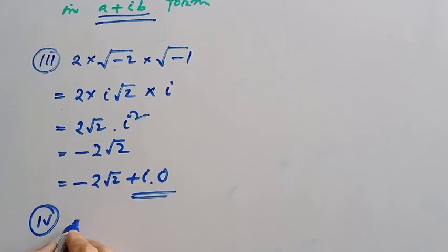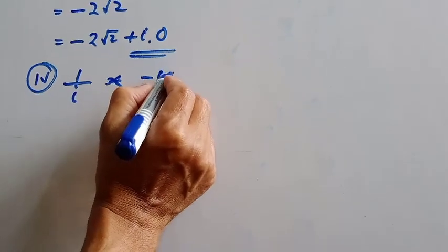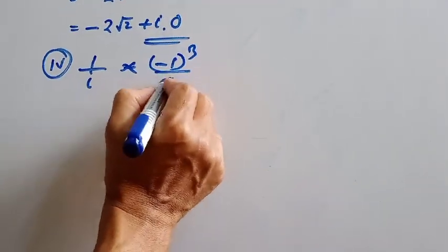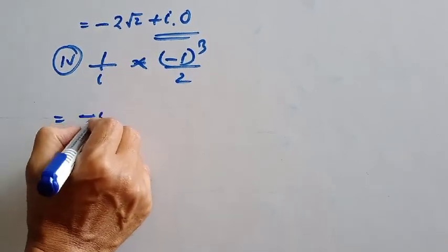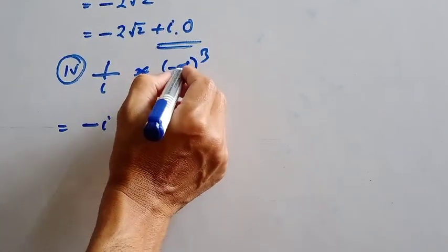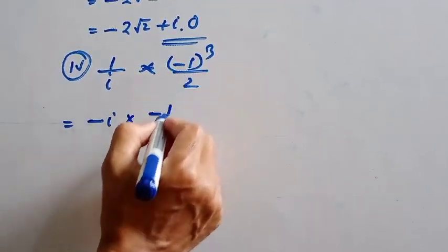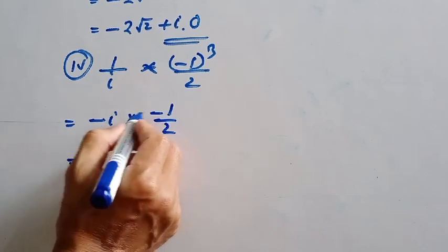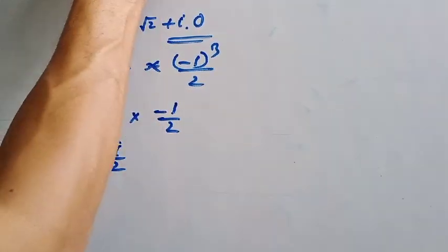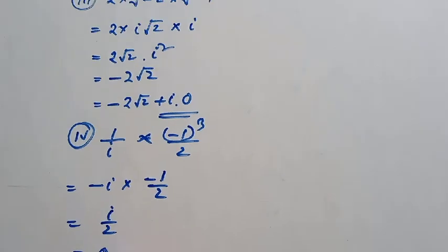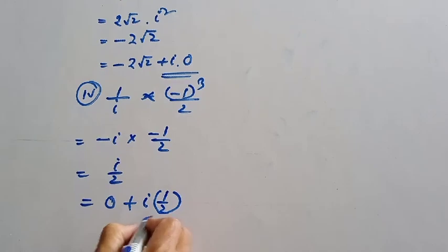Question number 4: 1 by i to the power 3, divided by 2. Now 1 by i means minus i. Since i cube is an odd power — 1 by 2 — we get minus minus plus, giving i by 2. Expressed in a plus ib form: 0 plus i times 1 by 2.